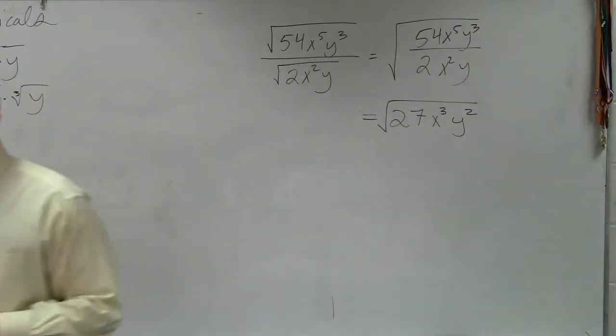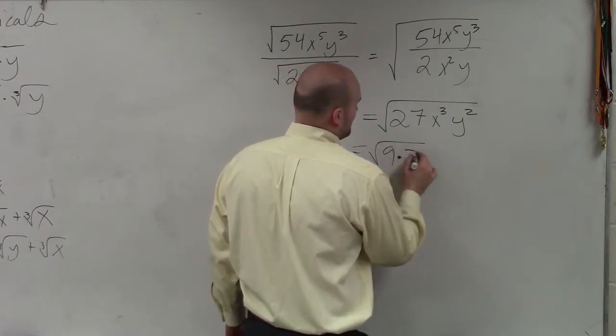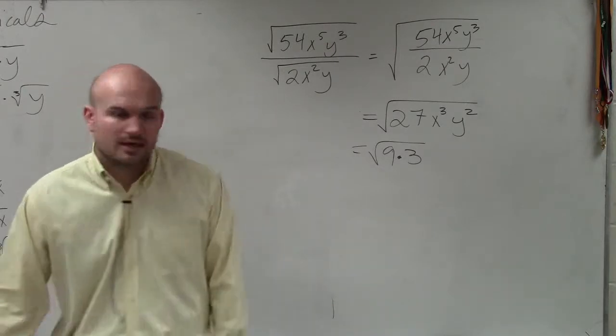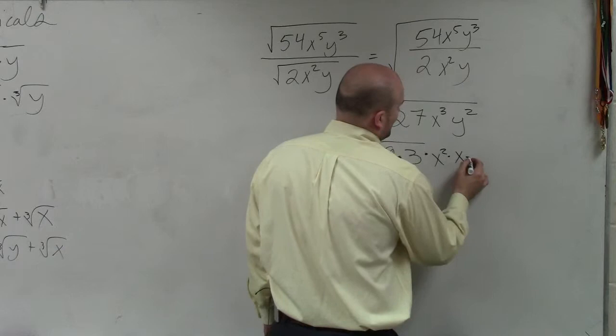So you're left with that. Now, you can also simplify that. So we say, all right, can I rewrite 27 as a product of a square number? 9 times 3. Can I rewrite x cubed as a product of a square number? Yeah. x squared times x. And then I have y squared.